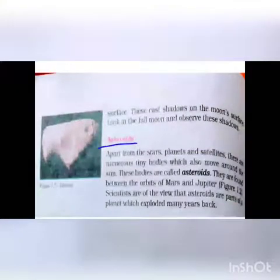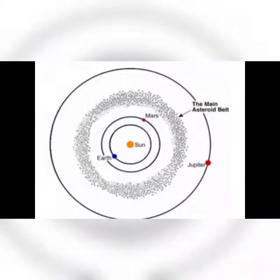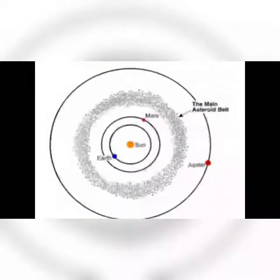Asteroids are small or tiny rocky bodies that move around the Sun. These are the small rocky bodies left over after the formation of the planets about 4.5 billion years ago — possibly remnants from the Big Bang explosion. They often move as minor planets around the Sun, revolving in a specific path.